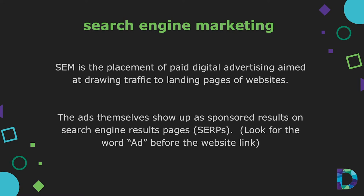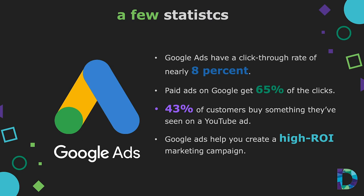When it comes to search engine marketing, we're basically talking about Google and, to a lesser degree, Microsoft Bing. Google Ads have a great click-through rate — paid ads on Google get 65% of clicks. Additionally, 43% of customers buy something they've seen on a YouTube ad, and Google Ads help you create a high ROI marketing campaign.